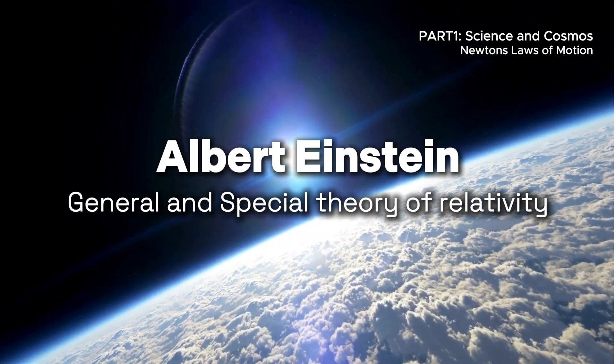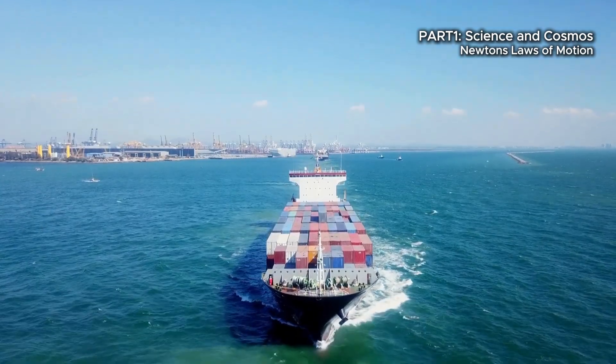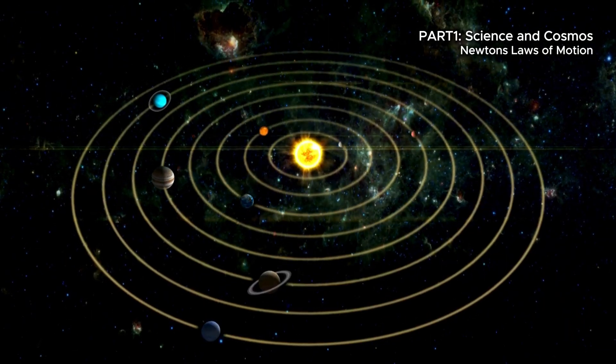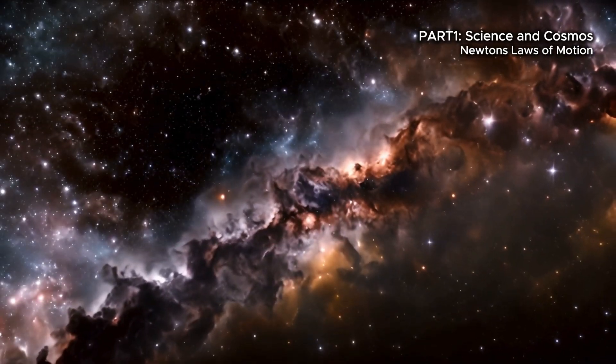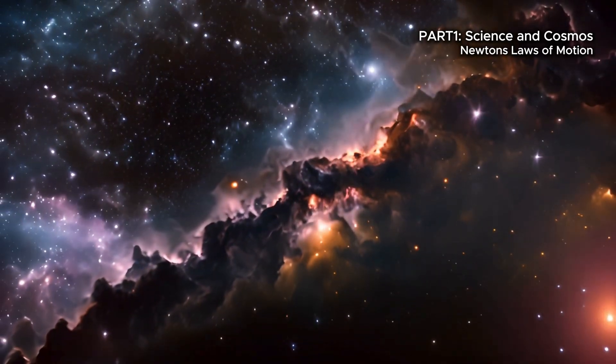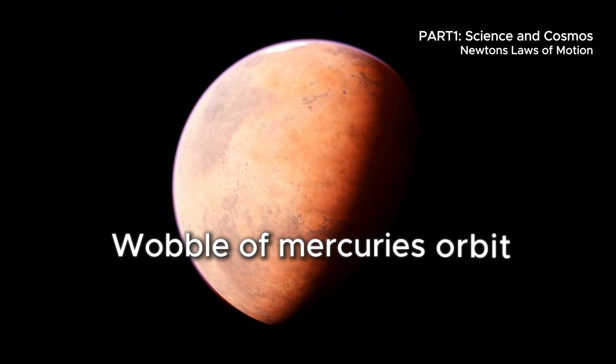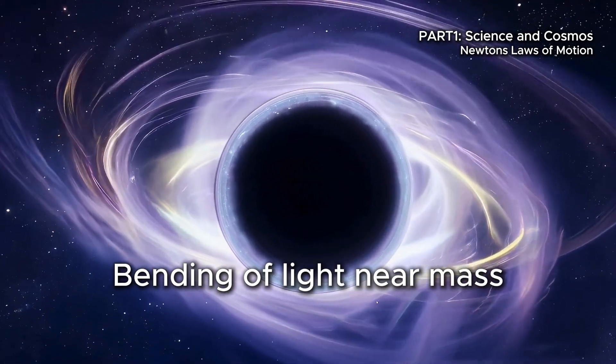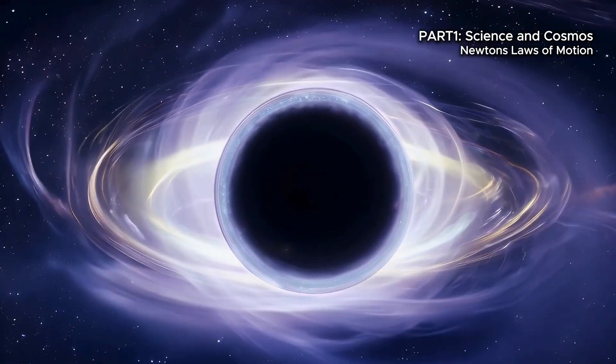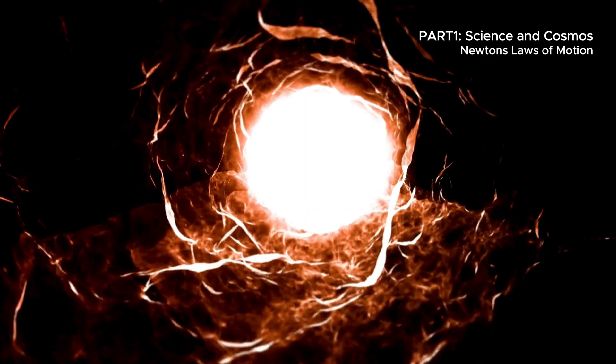For over two centuries, Newton's laws reigned supreme. They built bridges, launched ships, and charted the paths of planets with stunning precision. But as our instruments grew sharper and our gaze reached farther, cracks began to show. Mercury's orbit wobbled ever so slightly. Light bent near massive objects, and time itself seemed to stretch. These anomalies puzzled scientists, until one man reimagined the universe entirely.